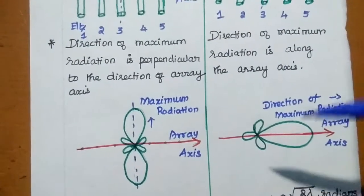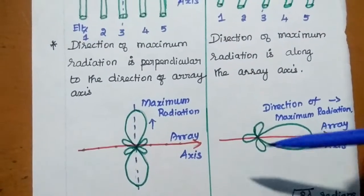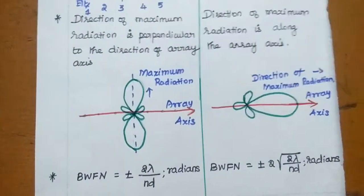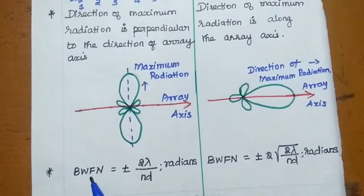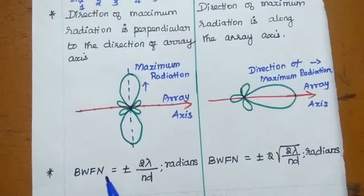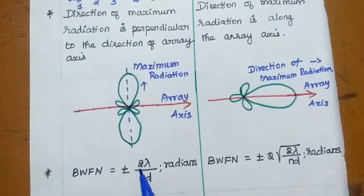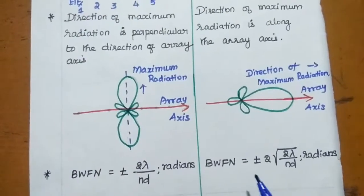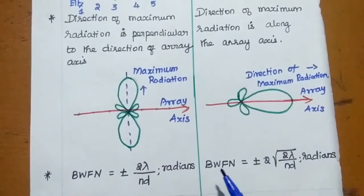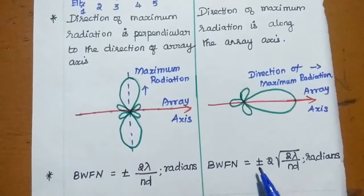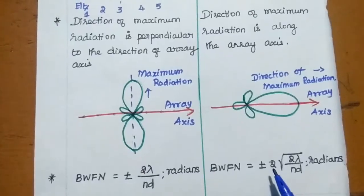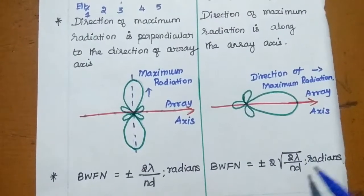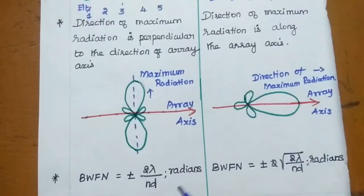The beam width between first nulls for broadside array is equal to ±2λ/ND radians, whereas for endfire array the beam width between first nulls is equal to ±2√(2λ/ND) radians. That is the difference and comparison between broadside array and endfire array.